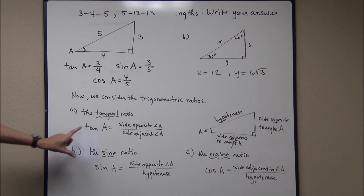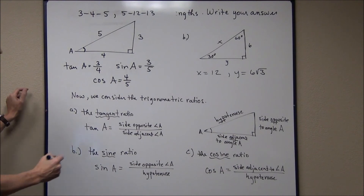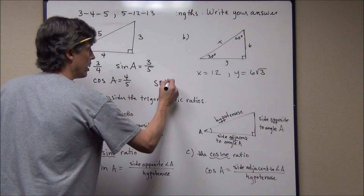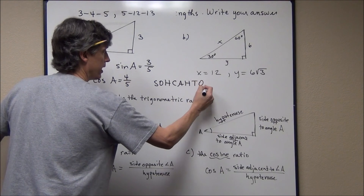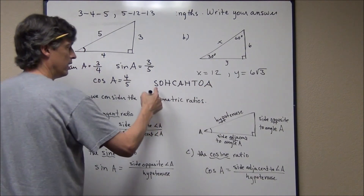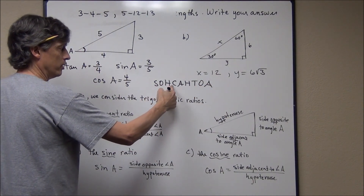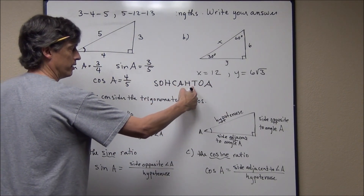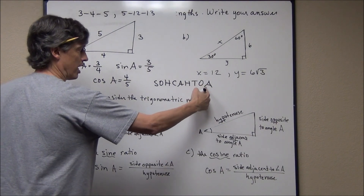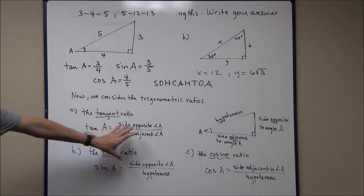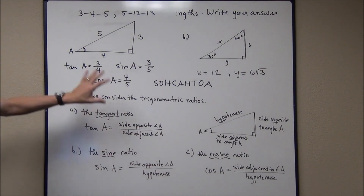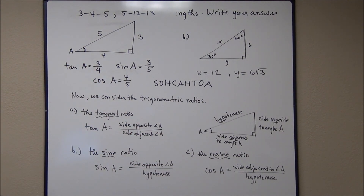One way to remember all this is the SOHCAHTOA mnemonic: Sine is Opposite over Hypotenuse, Cosine is Adjacent over Hypotenuse, and Tangent is Opposite over Adjacent. If you remember that, you'll have these three trig ratios ready any time you need them. As always, remember to practice, practice, practice.